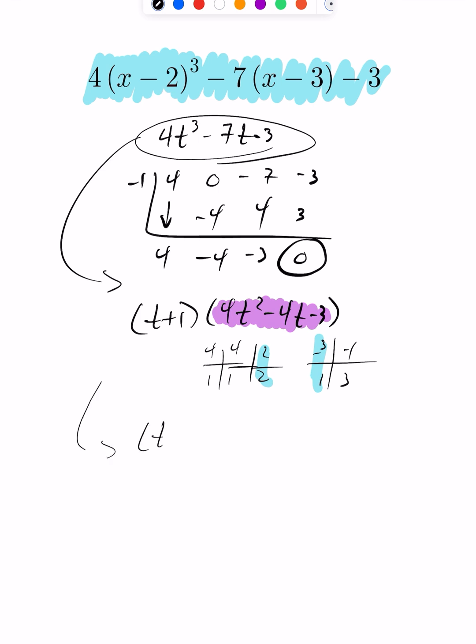using decomposition, this factors into (t+1)(2t-3)(2t+1), just treating it like a quadratic here.